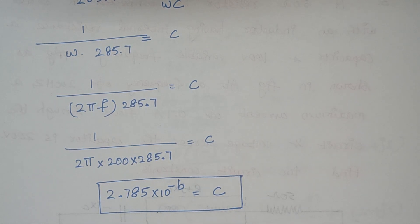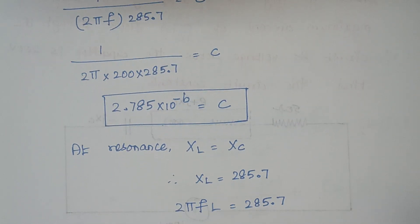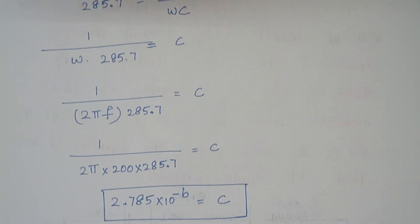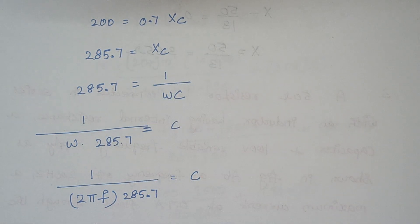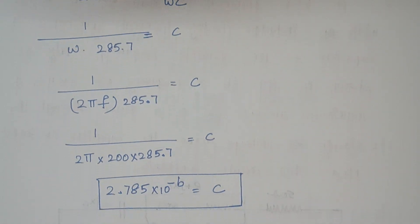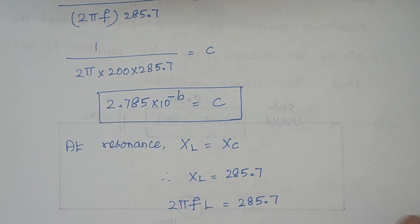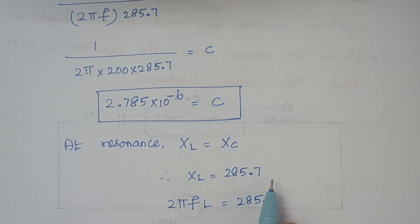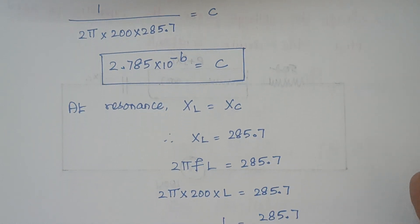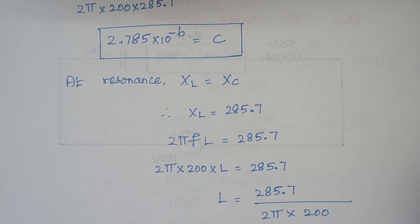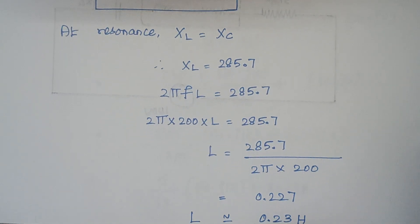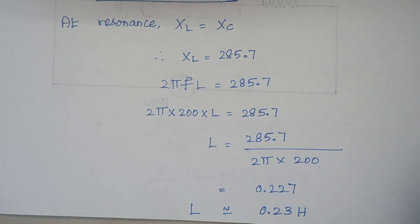Under the condition of resonance, XL equals Xc. We already calculated Xc = 285.7 ohms, so XL = 285.7 ohms as well. Using XL = 2 pi F L with F = 200 Hz, substituting and solving gives the value of inductance L = 0.23 Henry.